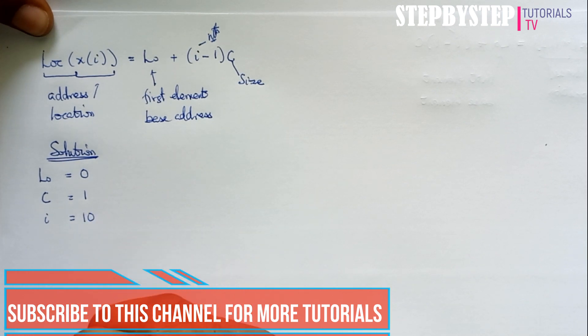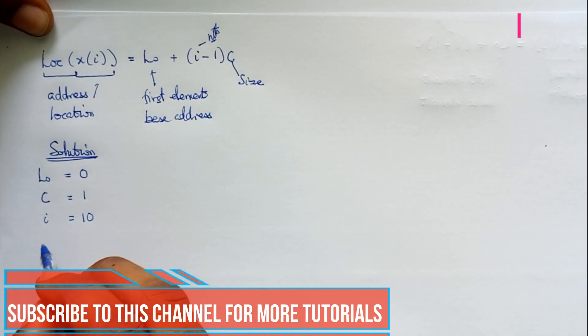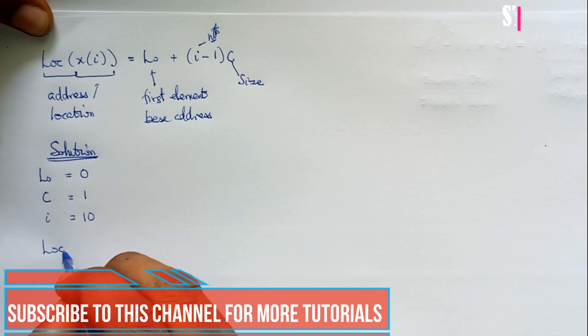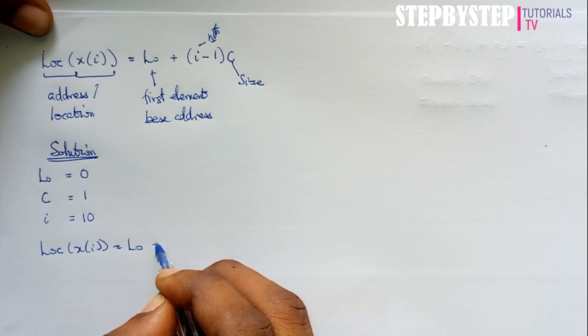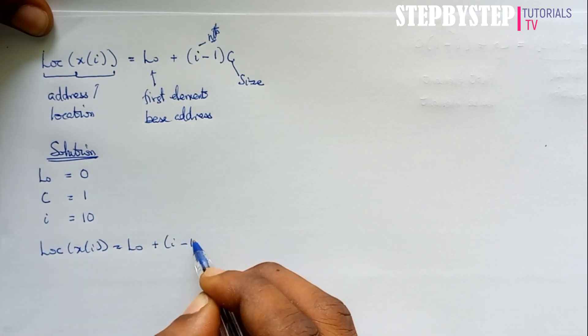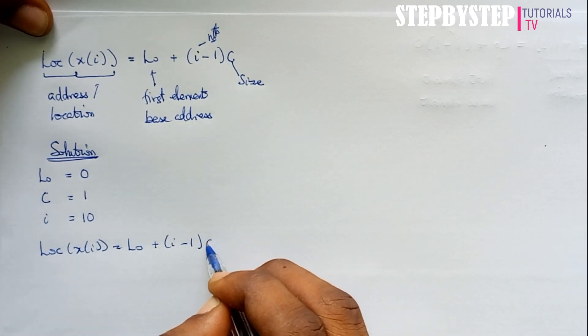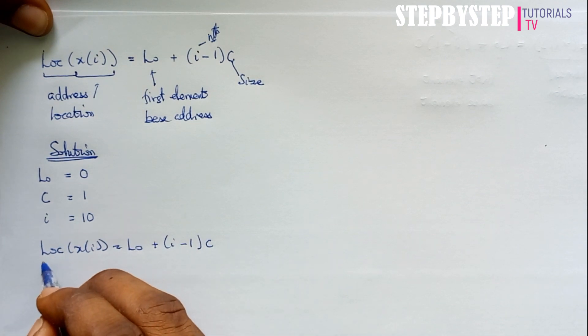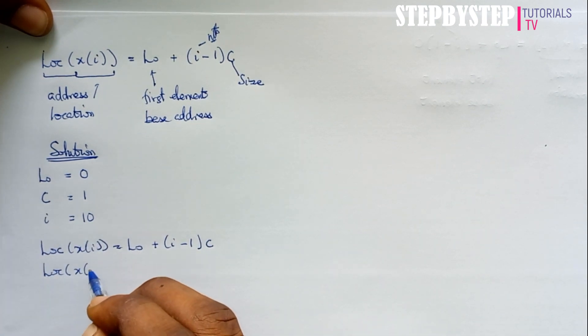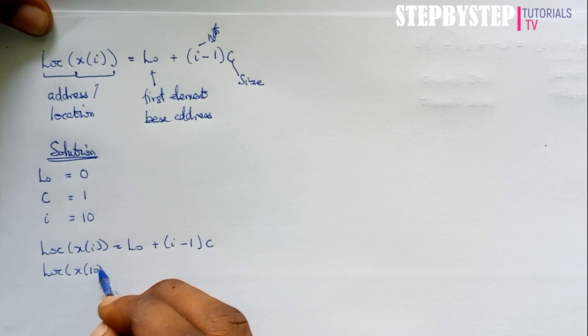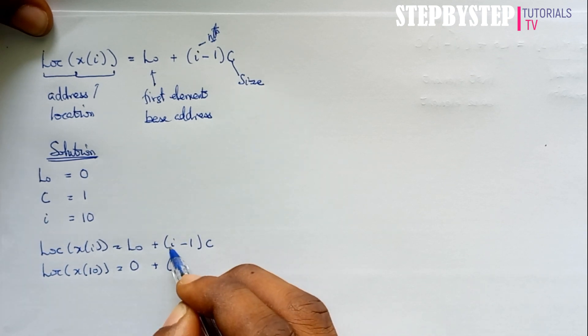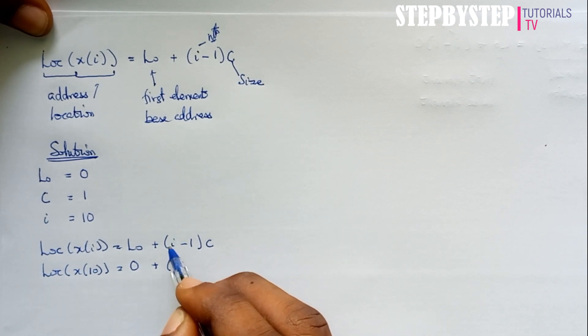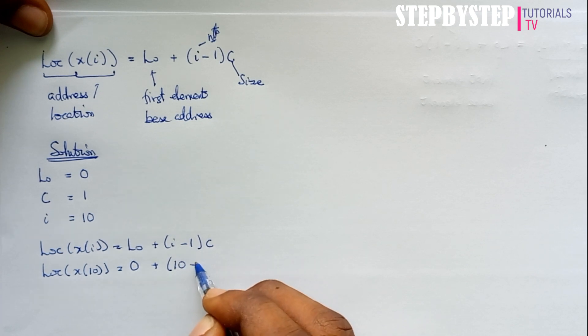So we write our formula again: we have LO + (I - 1) × C. We have LOC(X) where our I is the tenth position. Our first element is zero plus the nth element, or the nth position, which is ten minus one, multiplied by one.